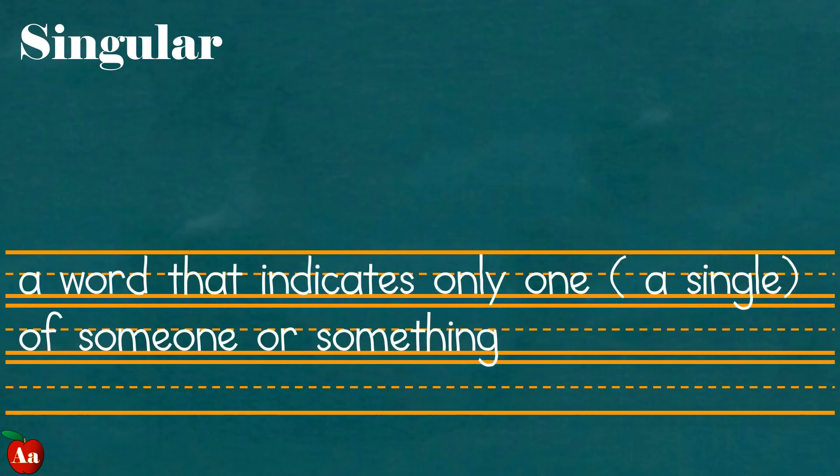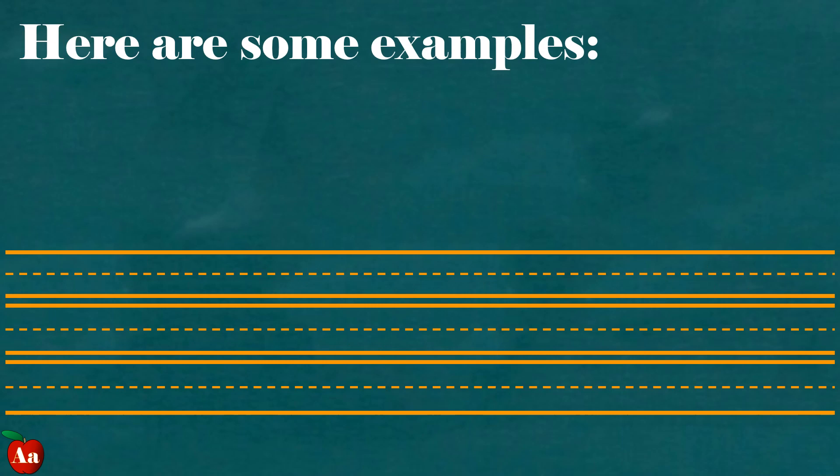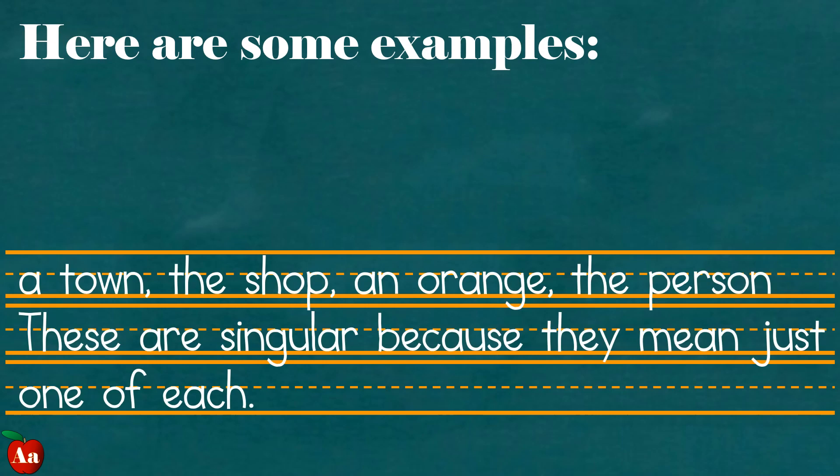Singular. A word that indicates only one, a single, of someone or something. Here are some examples: a town, the shop, an orange, the person. These are singular because they mean just one of each.